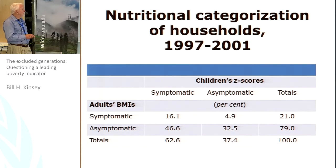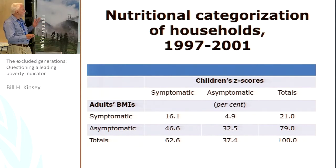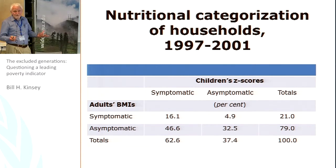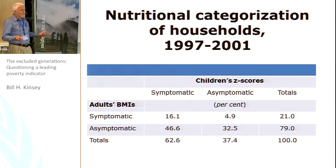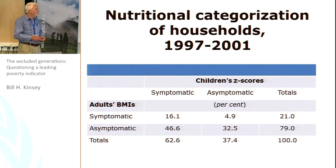What you have here is an indication that 16-plus percent of households have undernutrition among both adults and children. As a development economist, you might think that's clearly a poor group, a group that needs attention. On the other hand, you've got almost a third of households with no symptoms of undernutrition. You might think this group of households is pretty well off, and we don't have to worry too much about poverty.